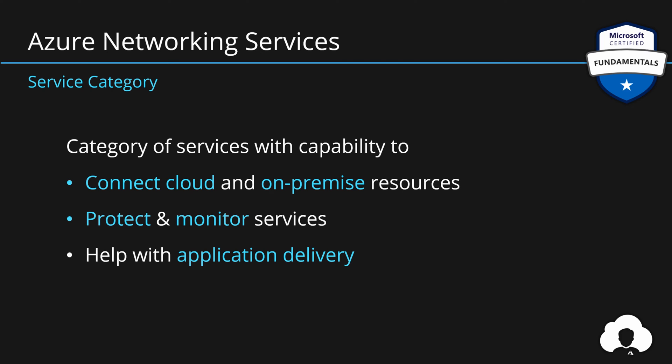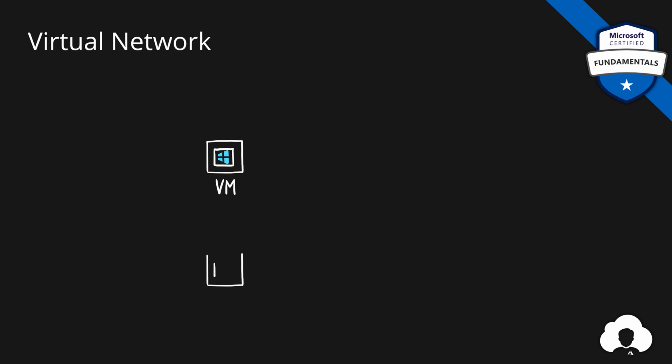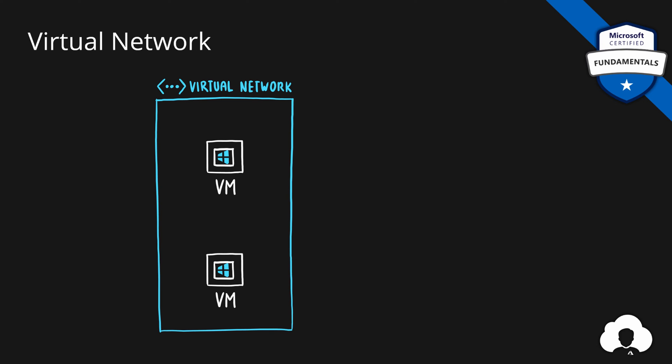The first service we will learn about today is Azure Virtual Network. Imagine you have two resources in Azure, let's say two virtual machines. Because virtual machines are a representation of physical hardware in the cloud, they also need to be placed into a representation of the physical network infrastructure. That representation in Azure is called Azure Virtual Network.